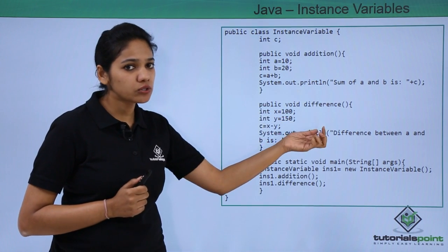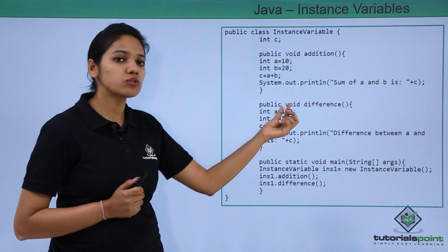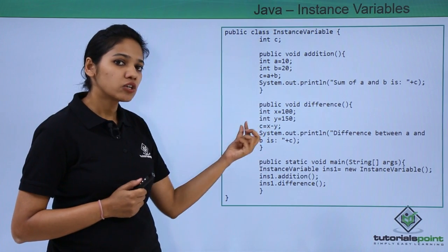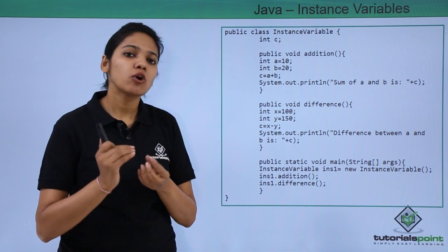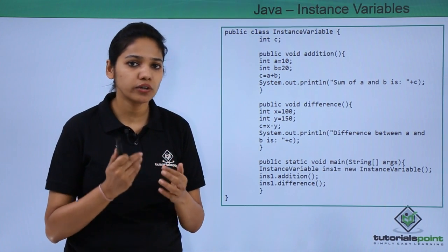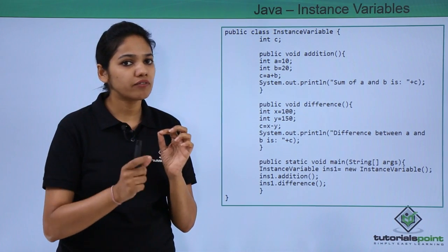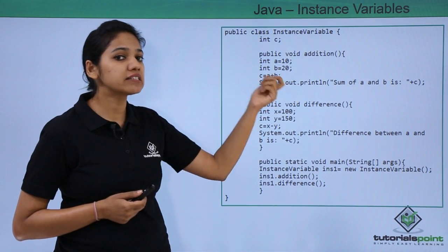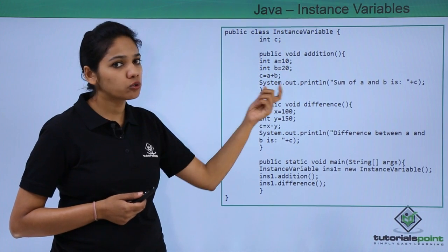If you have defined int a and int b inside one method, these variables are different from those defined in another method. Here x is some value and y is 150, and we find the difference between x and y and store it in c, reusing the instance variable c. When reusing it, you just provide the variable name equals to the value — you do not write int again. If you had written int c inside the method, it would have become local to that method. Instead, we declared c outside and use it to store the value.